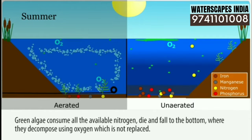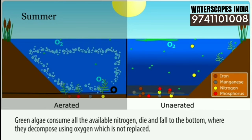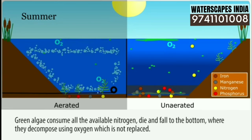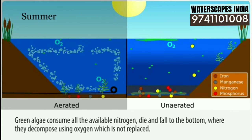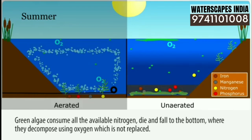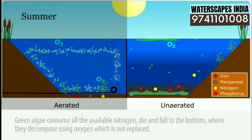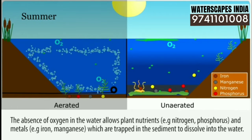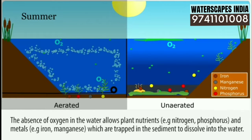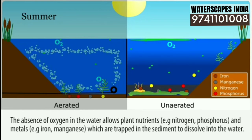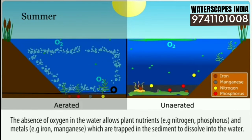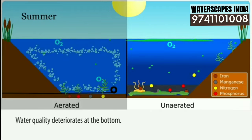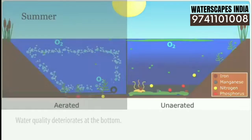Green algae consume all of the available nitrogen, die and fall to the bottom where they decompose using oxygen which is not replaced. The absence of oxygen allows plant nutrients — nitrogen and phosphorus — and metals like iron and manganese, which are trapped in the sediment, to dissolve into the water. Water quality deteriorates at the bottom.